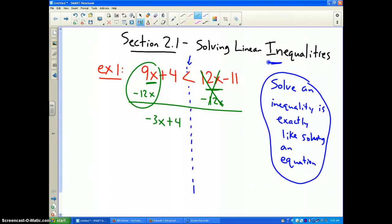Now I continue solving. I subtract 4 from both sides because I've got to get the x by itself. These cancel out and I get negative 3x is less than negative 15.